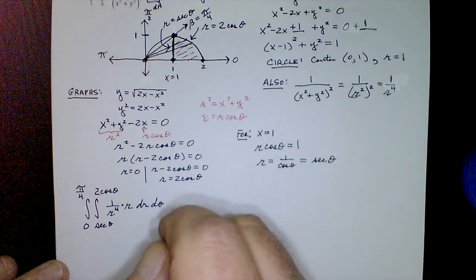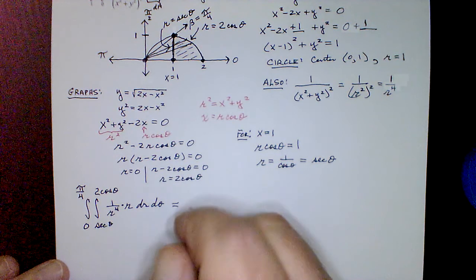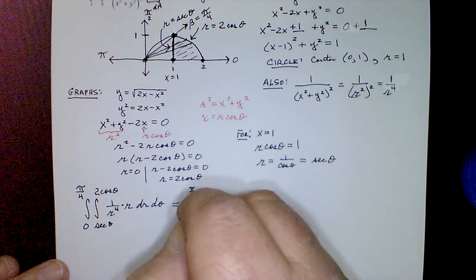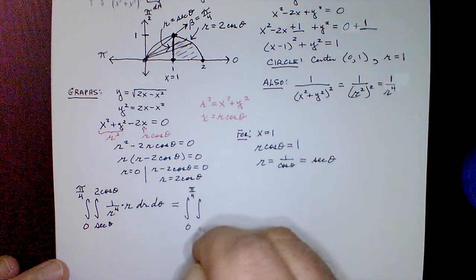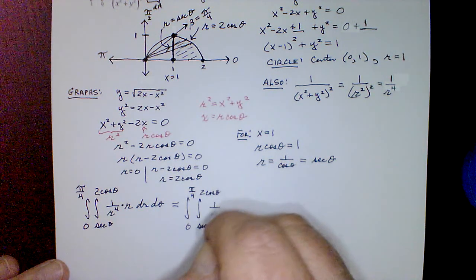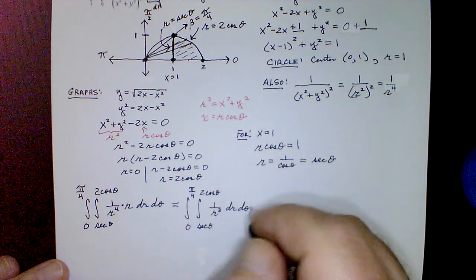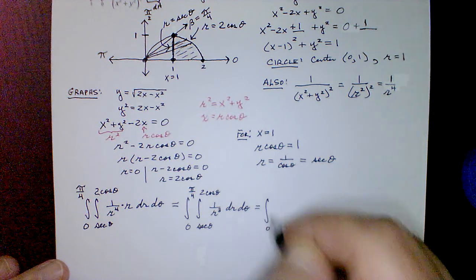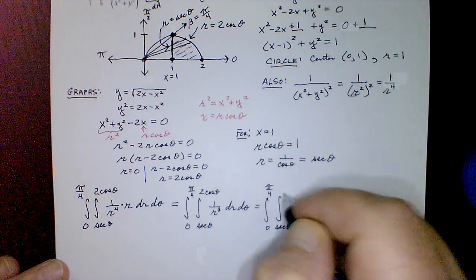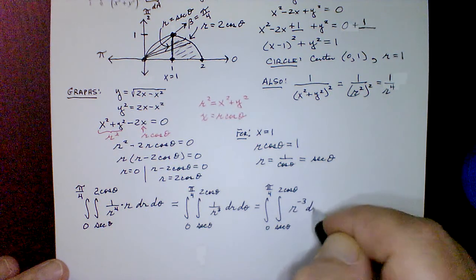The integral is now set up, so it's just a matter of doing the calculus. This is a fairly involved problem. Before integrating, we simplify algebraically: 1/r⁴ times r gives 1/r³, and writing that as r to the negative third power prepares us for the power rule.